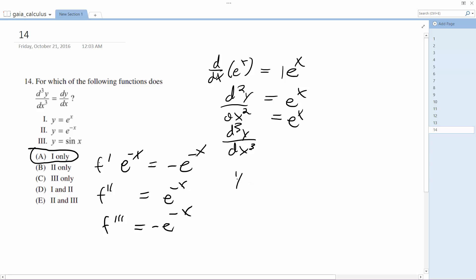Alright, and then for sine of x is equal to cosine of x. My double prime is equal to negative sine of x. And then y to the prime is equal to negative cosine of x.